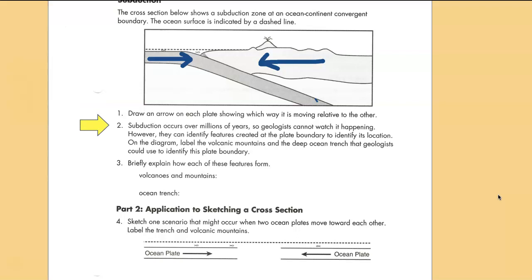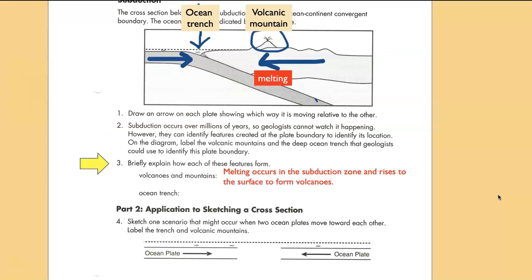The first question says to draw arrows showing the direction that each plate is moving, and so I've done that. It also says label the volcanic mountains and the deep ocean trench that geologists use to identify this type of boundary. There's the volcanic mountain and there's the ocean trench. Briefly explain these features. Well, melting occurs in the subduction zone where I've shown right down here, and we'll talk a lot more about that later in the semester. Molten rock rises through the lithosphere, and if it gets to the surface it forms a volcano.